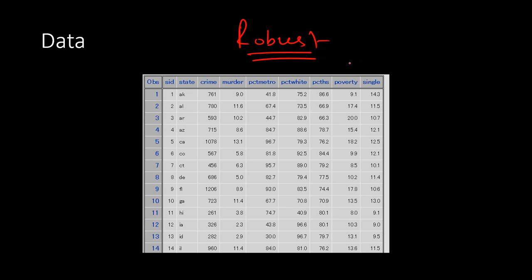Robust regression is not always used — it is only used when you cannot remove outliers. Many times you can go ahead and remove outliers, and in those cases you need not use robust regression. But when you have the restriction of keeping all data points and too many outliers, robust regression is the right choice.